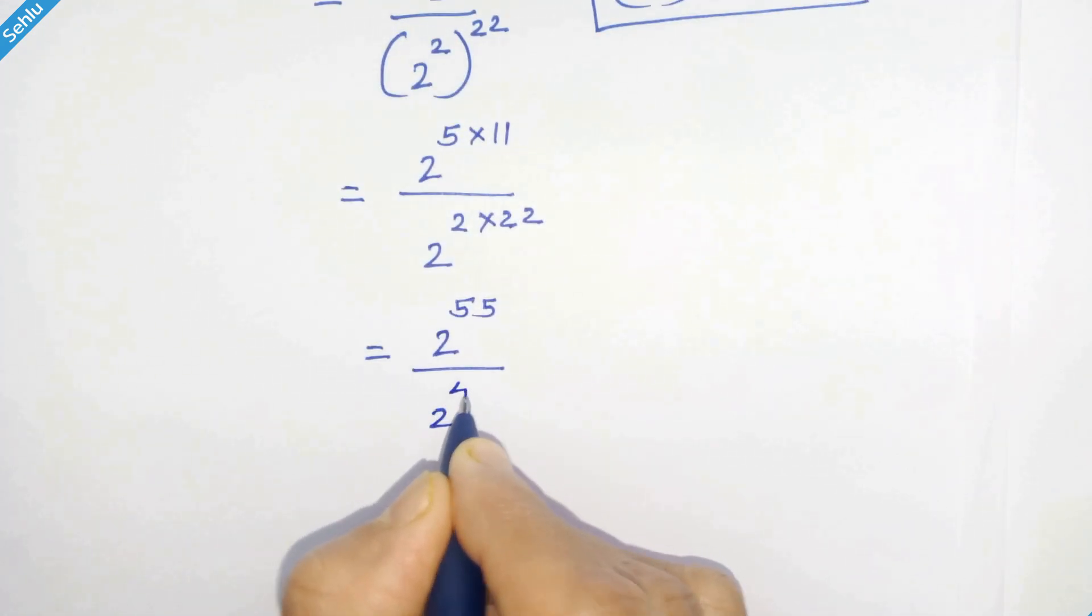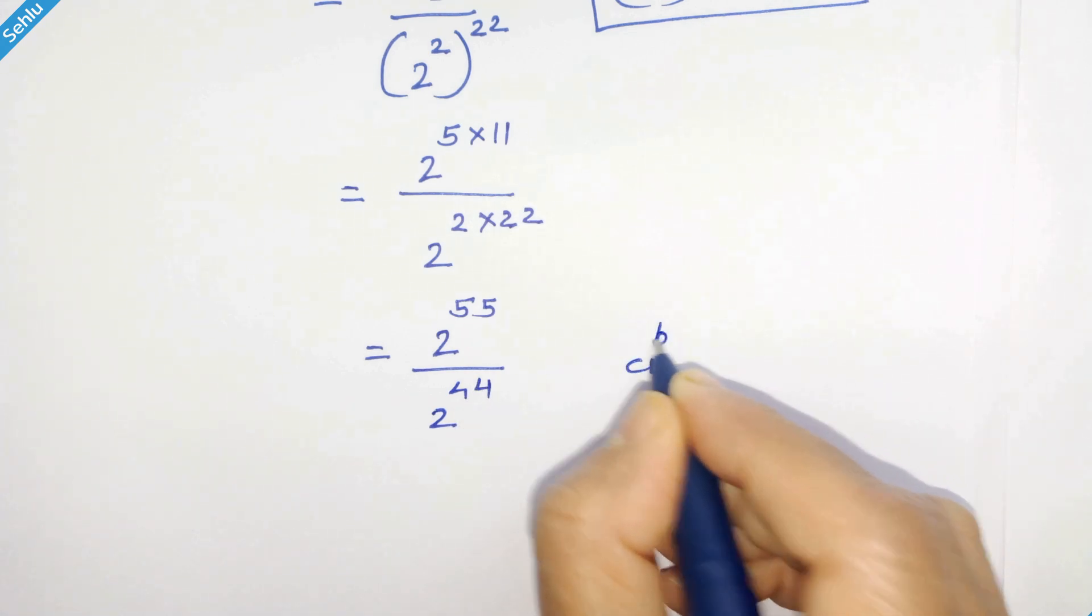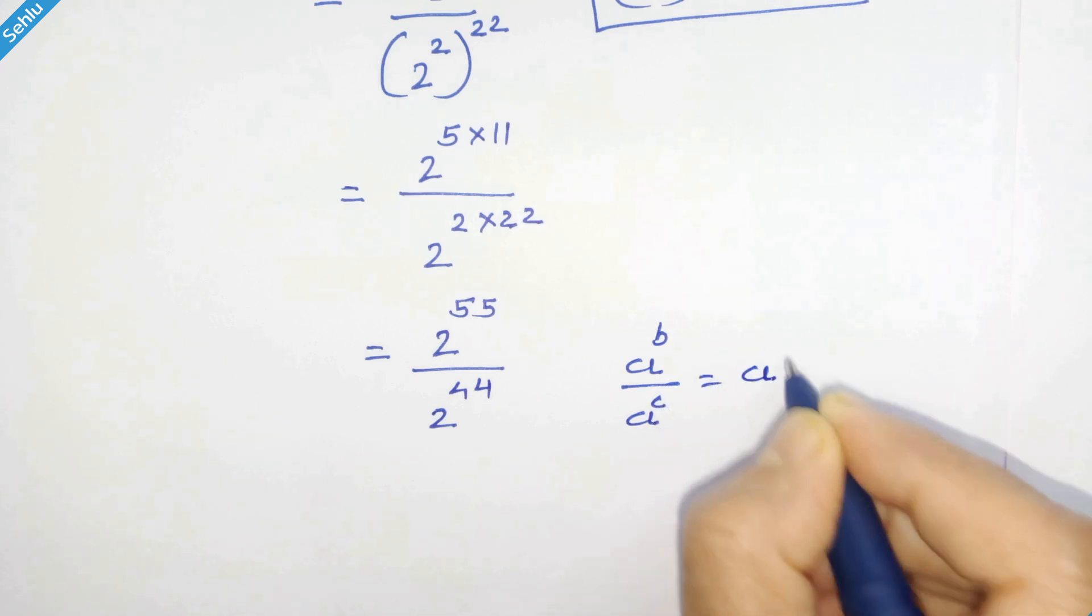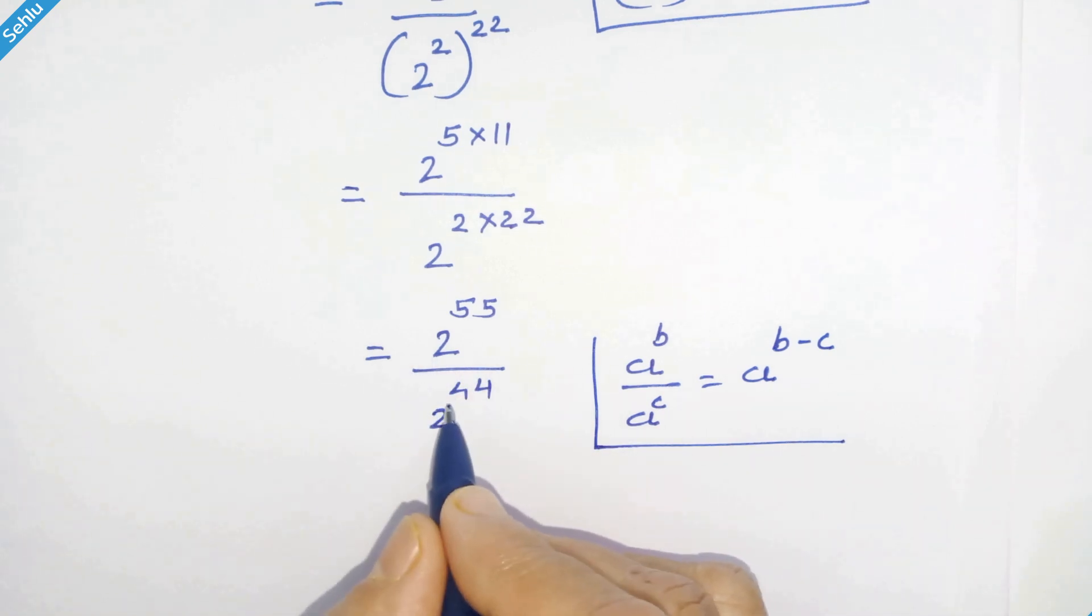so we have 2 raised to 44. Now let's remind this rule: where a raised to b upon a raised to c, then it can be a raised to b minus c. So here we can subtract 44 from 55.